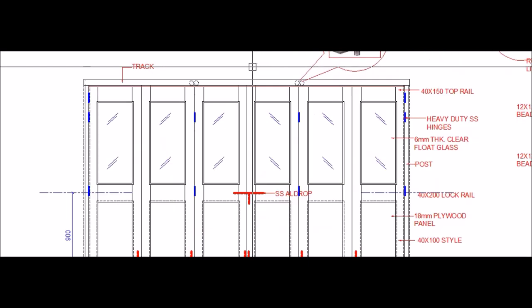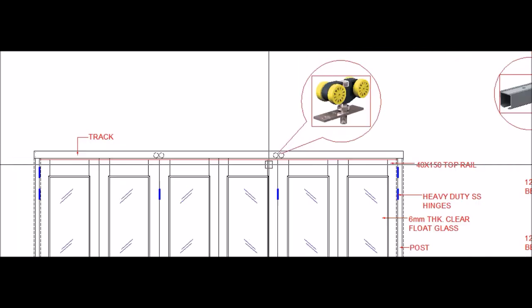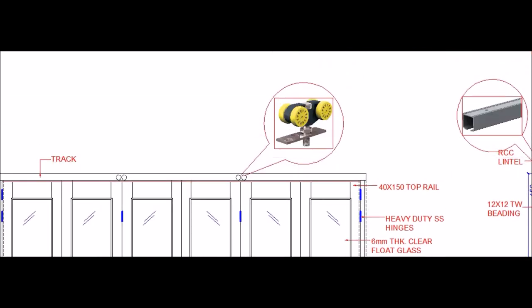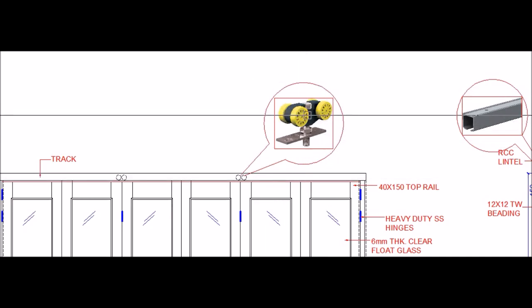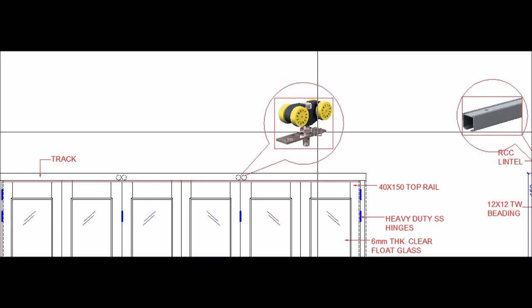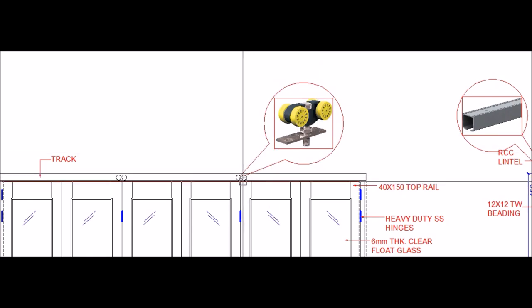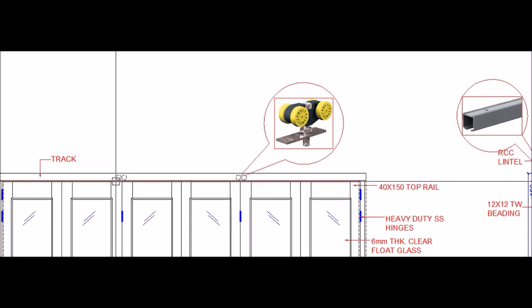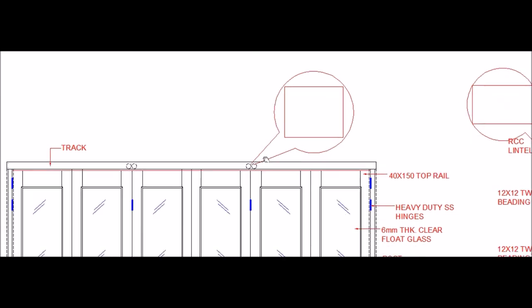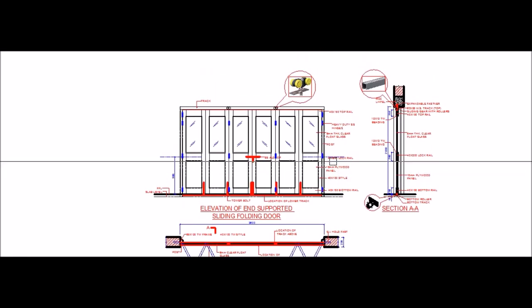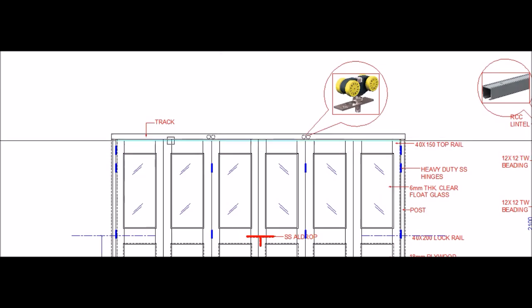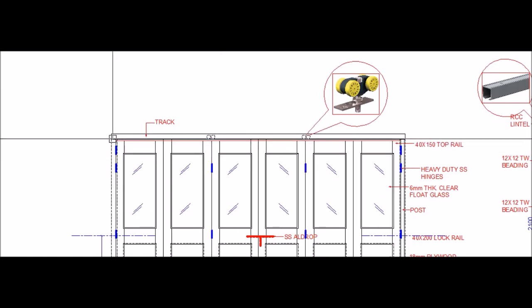Inside the track there are wheels. In three dimensions, you will see that there are four wheels mounted on a gear, located in the positions shown. This is what we call an end-supported sliding folding door. There is no head provided for the frame; instead, we have the track.